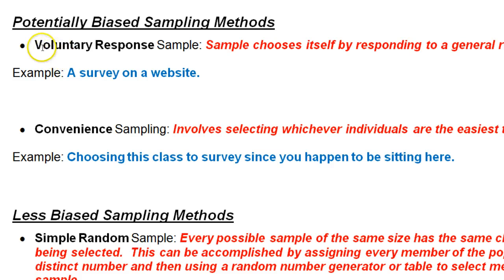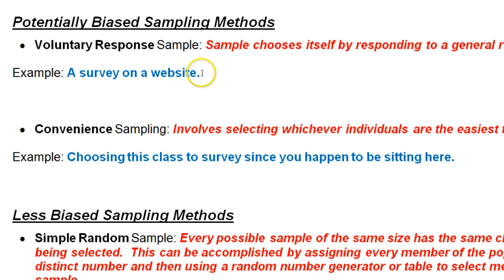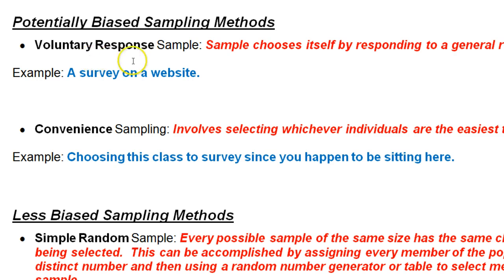The first method is voluntary response, and that's where the people who participate in the survey decide themselves whether or not to participate. Any survey that you send in the mail or post on a website will automatically be voluntary response because people can either throw away your survey, ignore it, or choose to take it. Voluntary response is usually going to be biased because only the people who care strongly about the issue will bother with the survey.